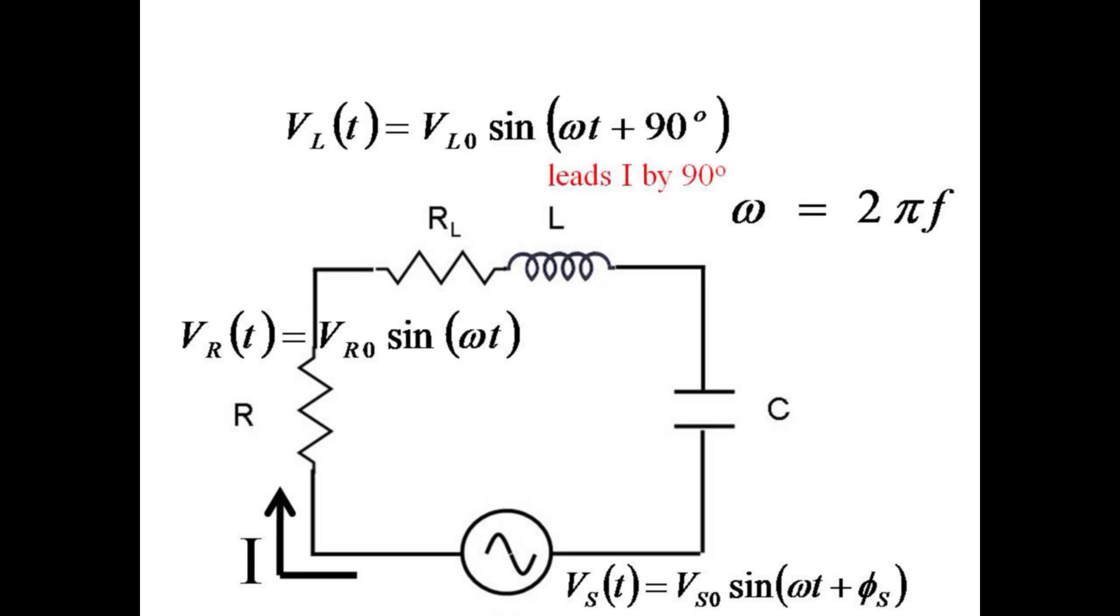The voltage across the inductor is a type of back EMF because the inductor opposes changes in current. Since the inductor opposes changes in current rather than the current itself, its voltage leads the current by a quarter cycle, or 90 degrees. The voltage across the capacitor is proportional to the charge on the capacitor rather than the current, and thus lags behind the current by a quarter cycle.